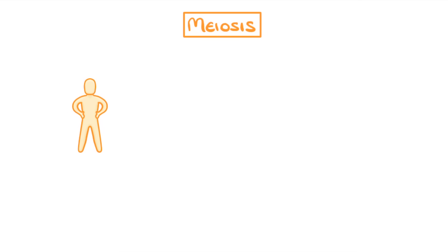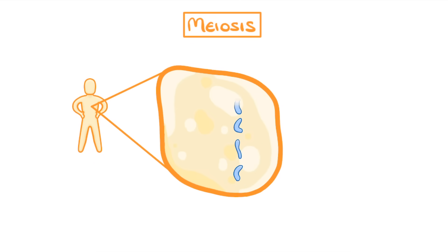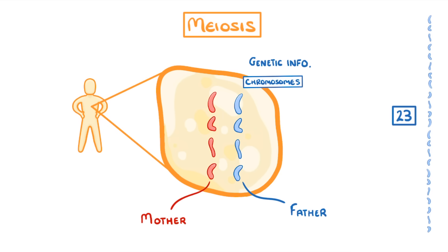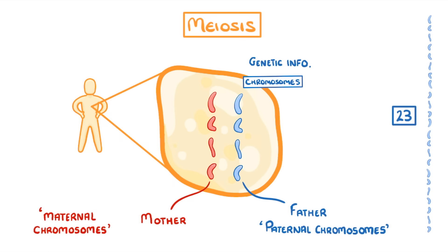First, let's quickly recap chromosomes so there isn't any confusion. If we were to take a human and look inside the nucleus of any cell, we'd find these things called chromosomes, which contain genetic information. We have 23 different types of these chromosomes in almost every cell in our body. And for each of these 23 types, there are actually two different copies — one set from the father, shown here in blue, and one set from the mother, shown here in red. We can call the ones from the mother maternal chromosomes, and the ones from the father paternal chromosomes. Because we have 23 different types and two copies of each, each of our cells has a total of 46 individual chromosomes.